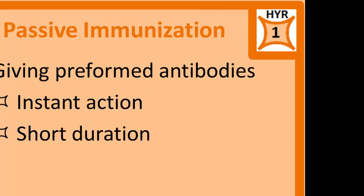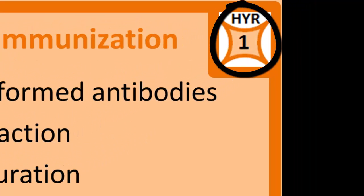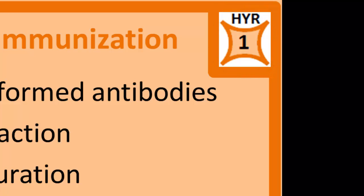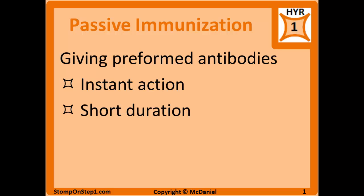We will start with passive immunization, which you can see here in the top right corner. I only give it a high yield rating of 1 on a scale from 1 to 10, so it's not super important for Step 1, but I will take a second to discuss it. Passive immunization involves delivering preformed antibodies to the individual at risk of infection — you're taking the humoral immunity from one individual or animal and transferring it to another who's at risk. It has an instant effect as the immunoglobulins are preformed and the body doesn't need to make antibodies of its own.